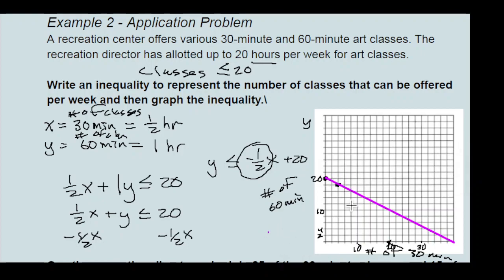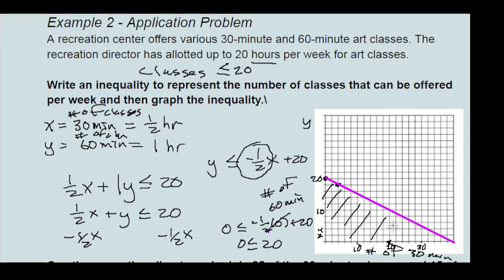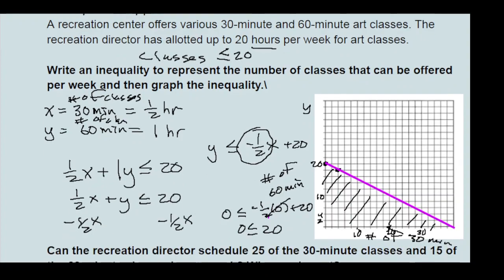For the shading, let's test the origin (0, 0). Substituting in: 0 is less than or equal to negative one-half times 0 plus 20, which simplifies to 0 is less than or equal to 20. That's absolutely true, so all the coordinate pairs on the origin's side of the line satisfy this inequality. We shade that region.